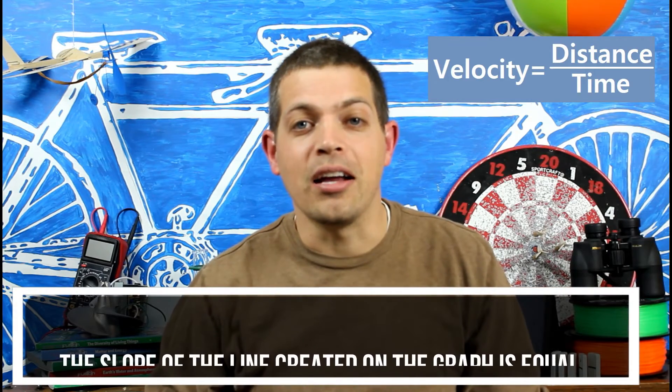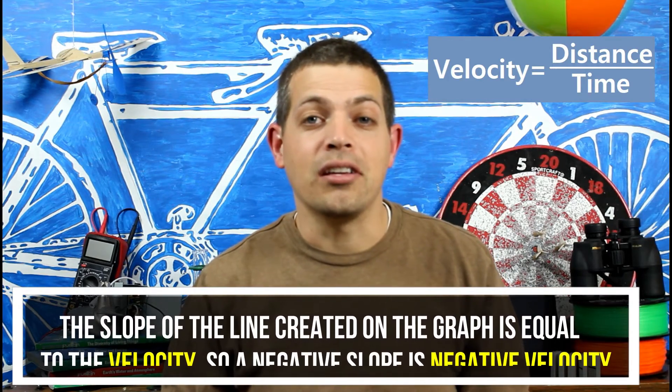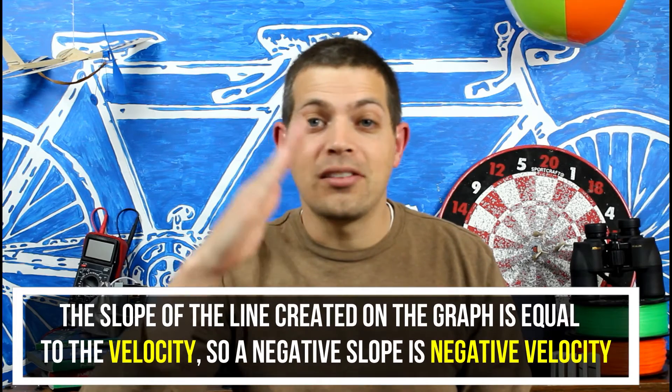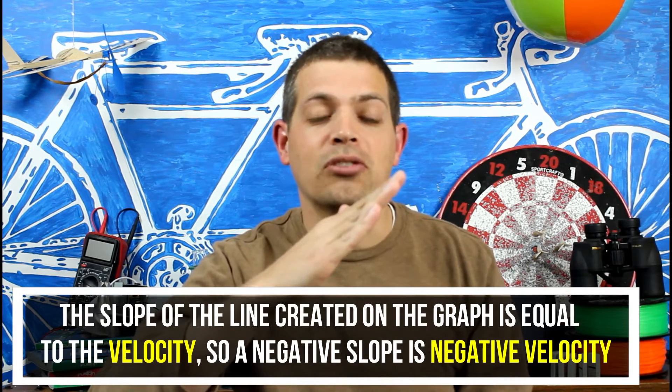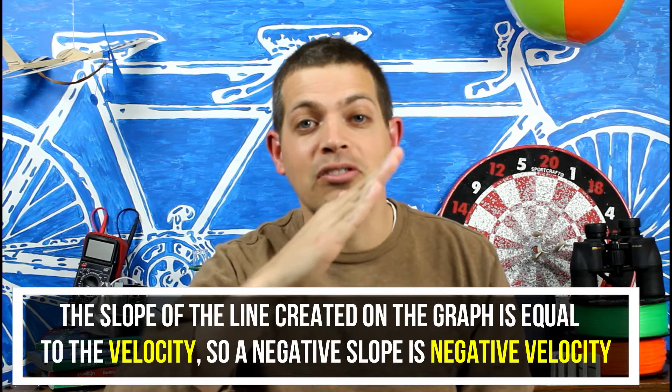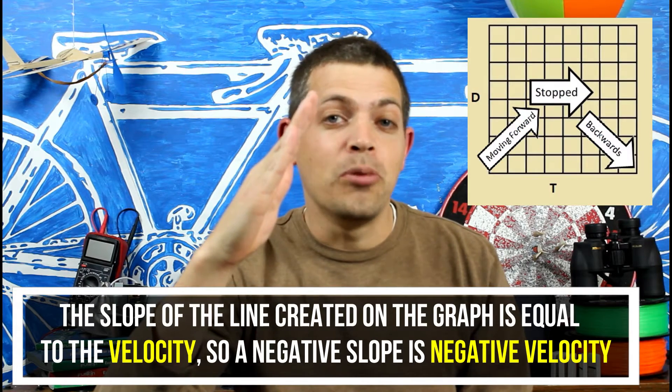So the slope of this graph for distance over time is actually velocity. When the line is moving up, we know that velocity is increasing. As a matter of fact, the steeper the slope, the faster we are moving.